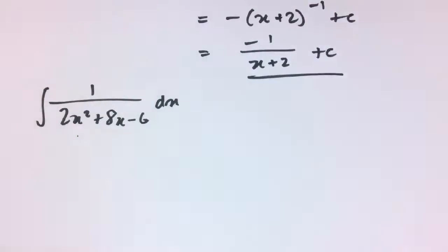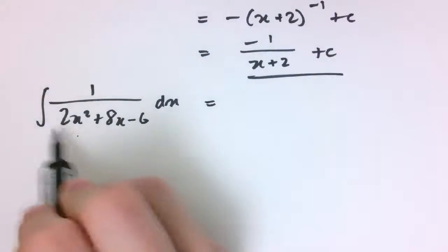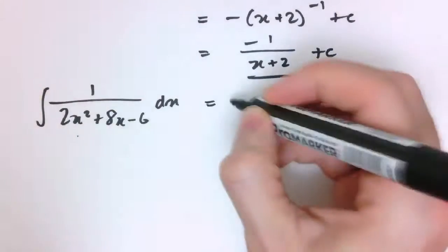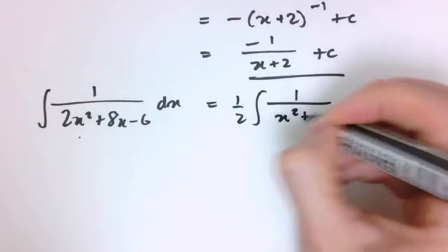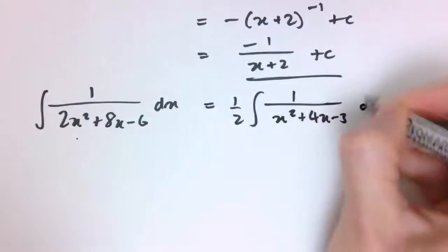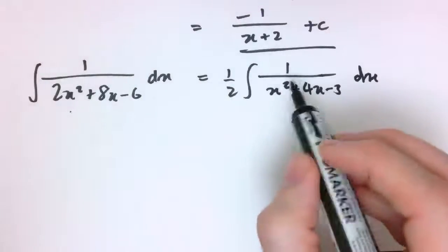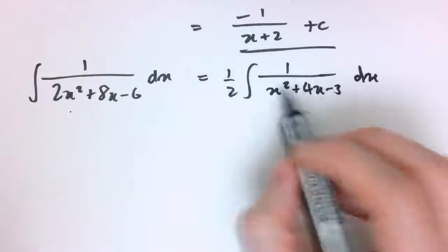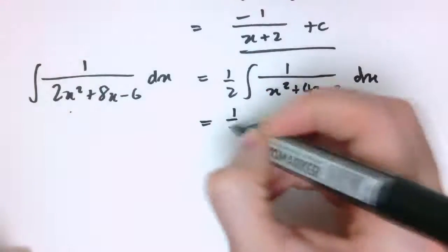And the final case I want to consider is if it's not a monic quadratic, well, that's easy enough to deal with because I can just pull out a factor to make it a monic quadratic, so I've got 2x squared here, so I can just say, okay, this is a half times 1 over x squared plus 4x minus 3 dx, and then go do exactly the same thing as we did before here.